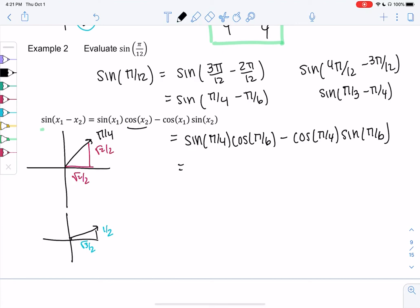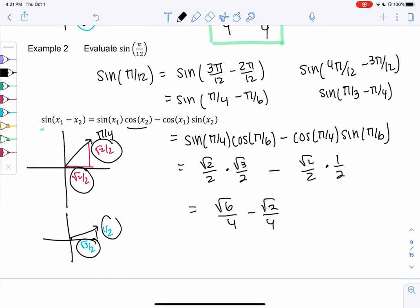Alright, so then let's put these together. So sine of pi over 4 would be up and down. Cosine of pi over 6 would be sideways, root 3 over 2, minus, and then we get cosine of pi over 4, so that's this one, root 2 over 2, and then sine is 1 half. And we actually end up getting the same answer as before. Just a coincidence.